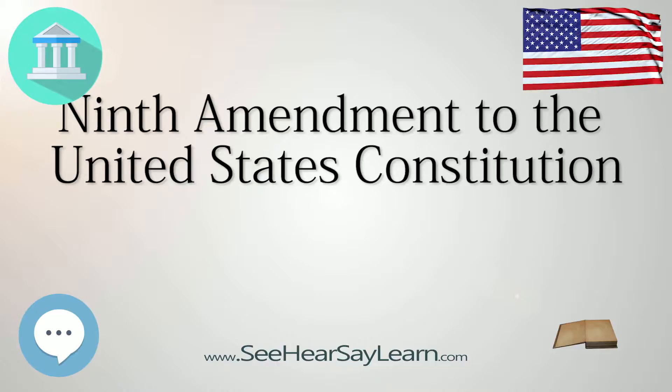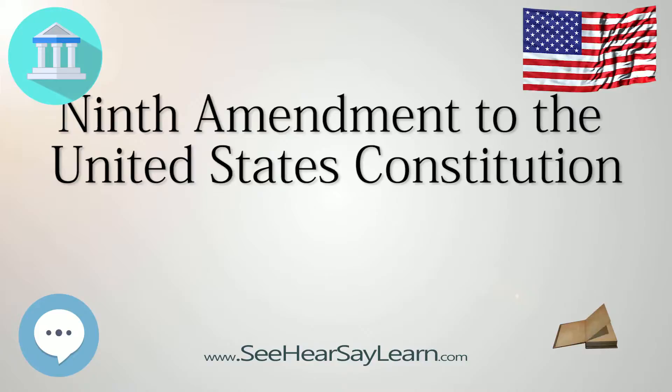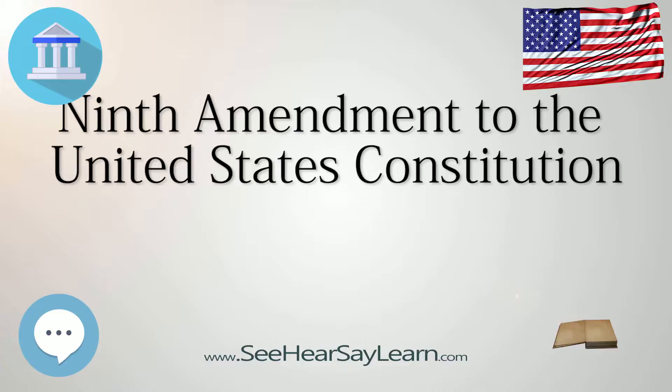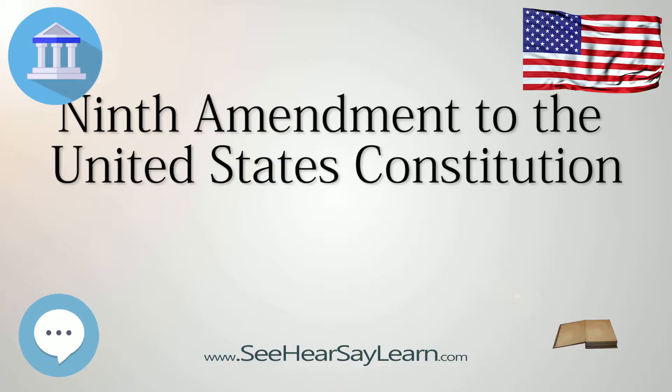312 U.S. 100, 124, was framed by James Madison and adopted by the states simply to make clear that the adoption of the Bill of Rights did not alter the plan that the federal government was to be a government of express and limited powers, and that all rights and powers not delegated to it were retained by the people and the individual states.